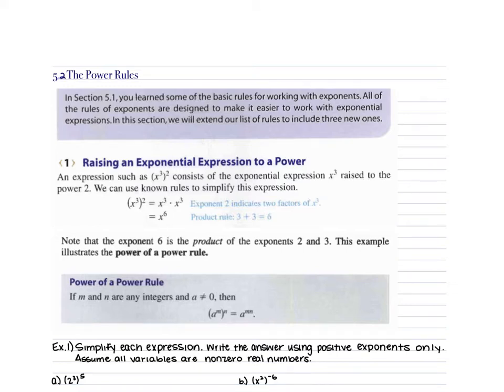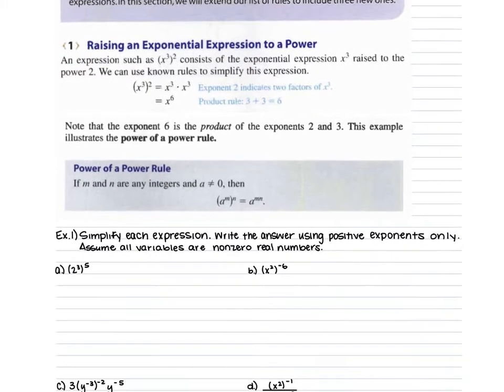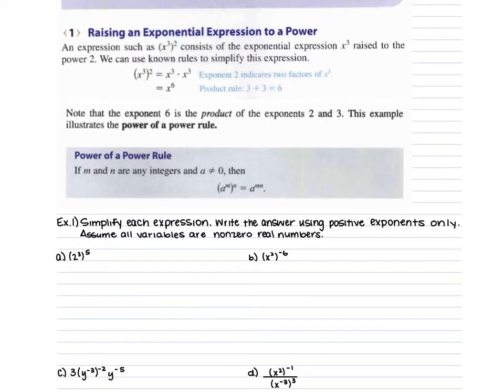Section 5.2 goes over your rules for your powers. We're going to start with raising a power to a power. So when there's an exponent raised to a power, we are going to multiply those two powers together.